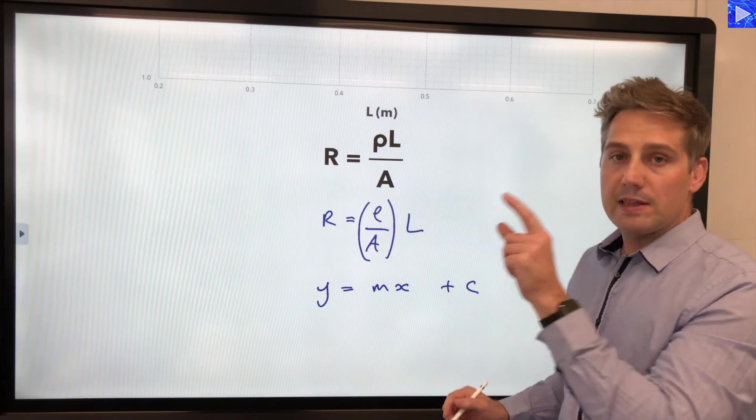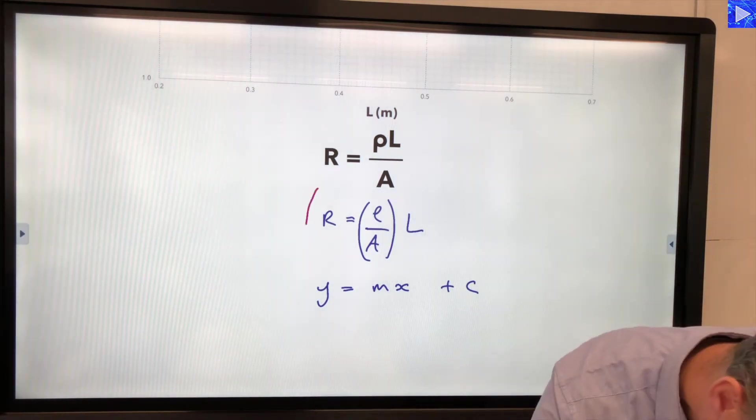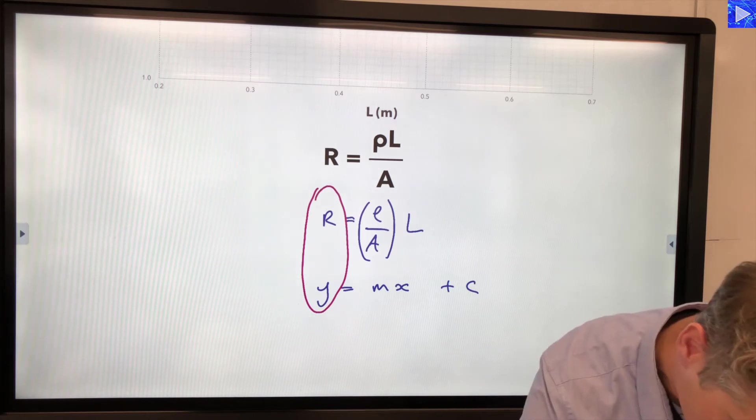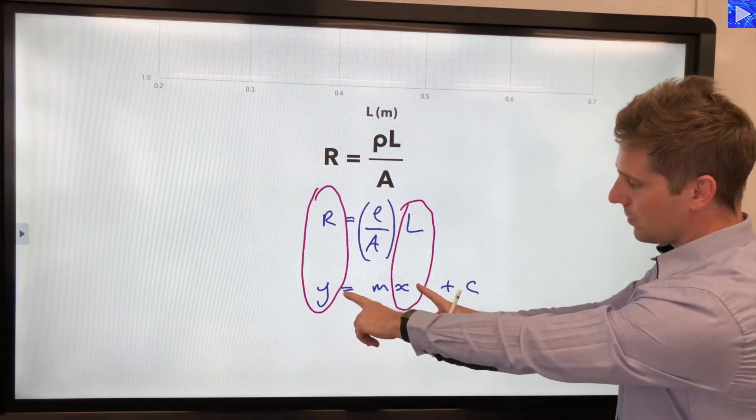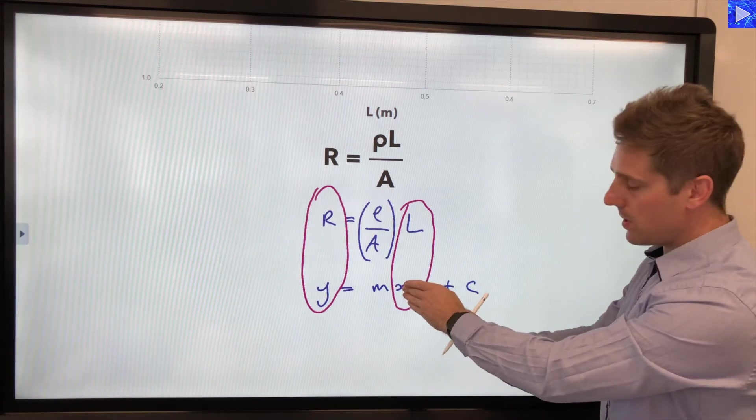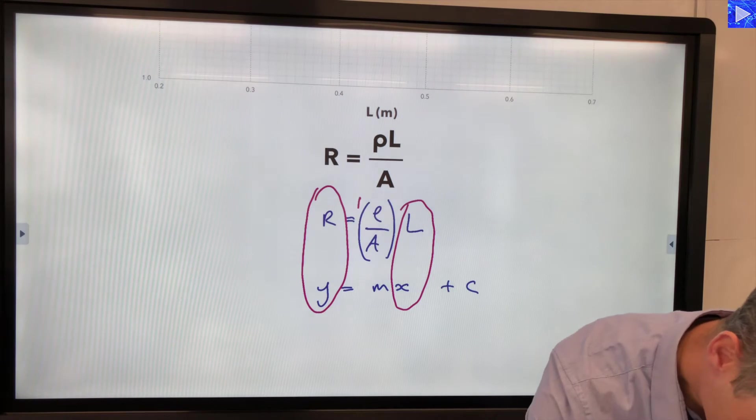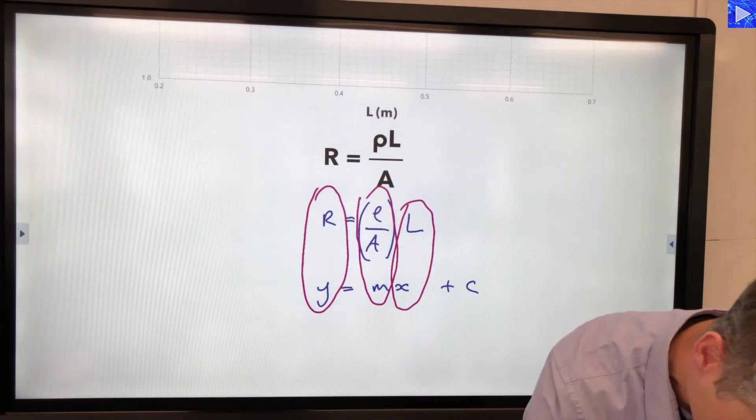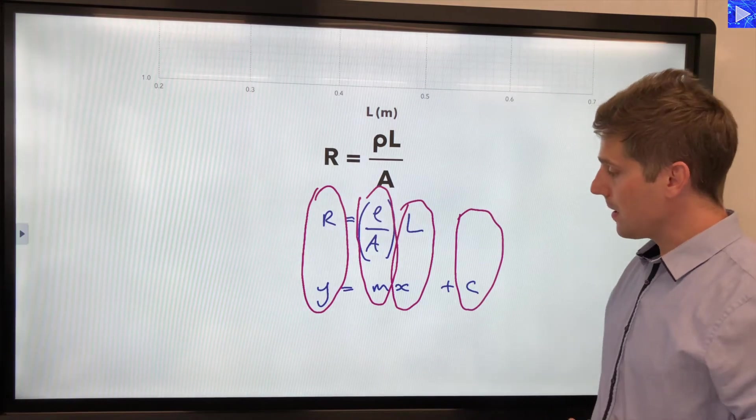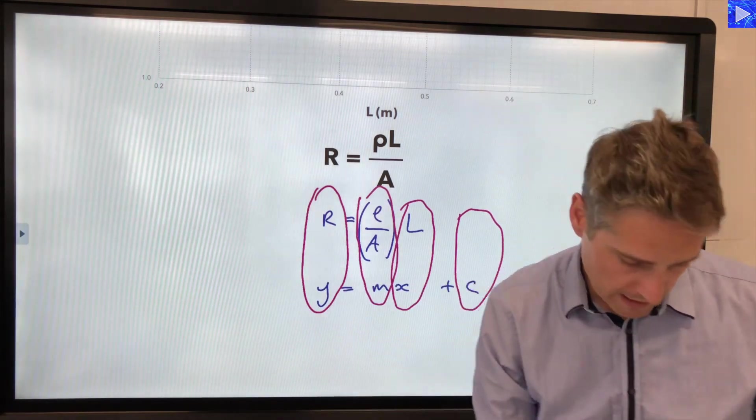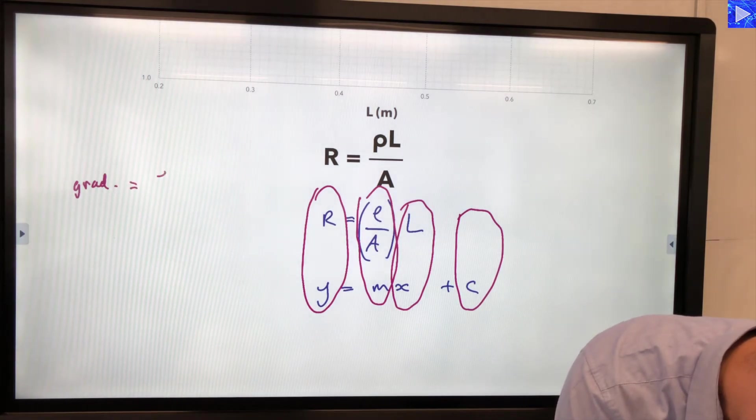Okay so we said that r was on the y axis and it's therefore the y variable. L was our x variable. So those two are identified. Everything that's multiplied by the x variable is equal to the gradient so that's rho over a. And once again we have a y intercept of zero. So let's write down what we have over here. Gradient is equal to rho over a.